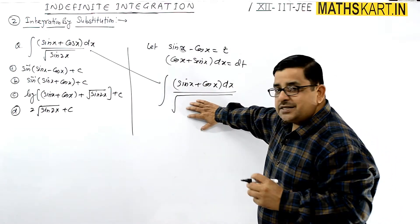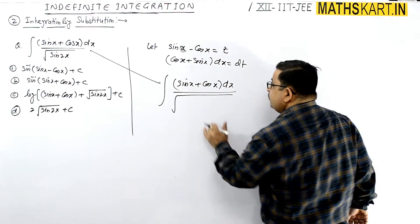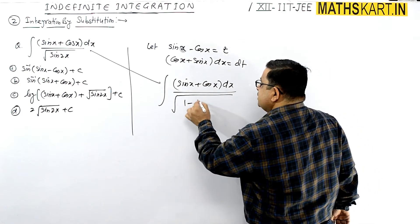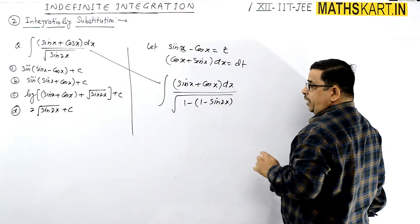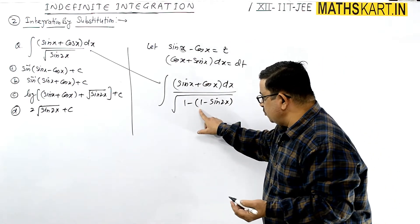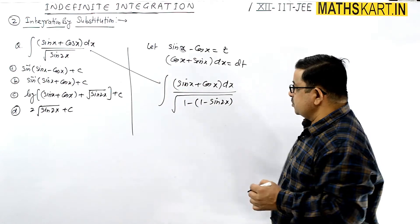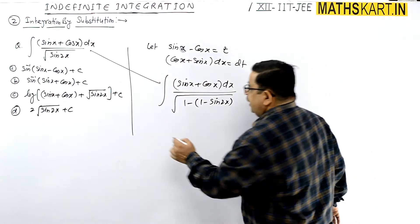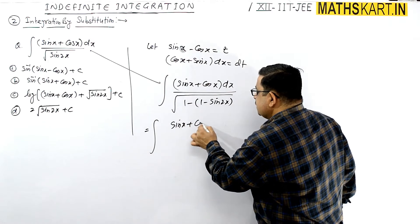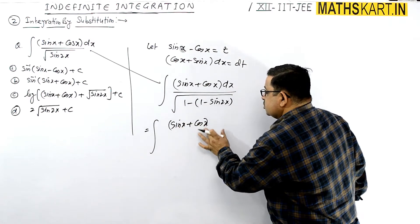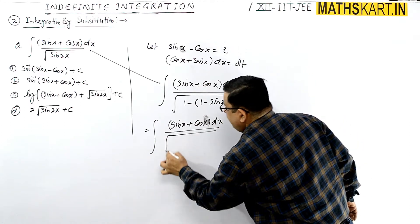One important thing to remember: sin 2x can be written as 1 minus (1 minus sin 2x). See here — 1 minus 1 cancels, and minus minus becomes plus sin 2x. We can write it in that position. Writing it this way allows us to rewrite (sin x + cos x) into dx divided by the root expression.